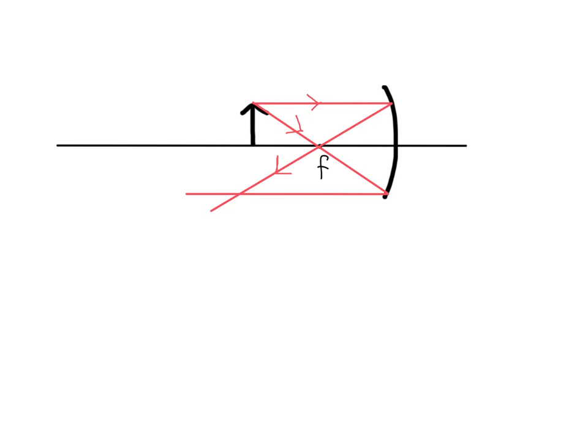And then any ray that goes through the focal point bouncing off the object is going to be reflected back parallel.